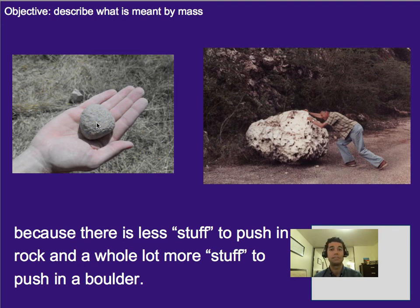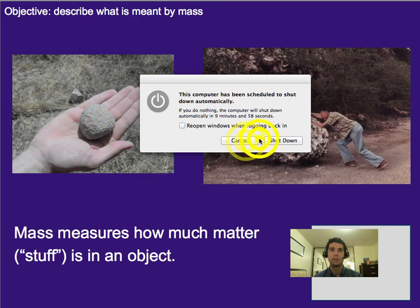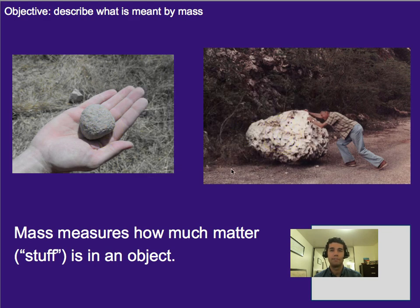To put it in a more scientific way, there's less matter in the small rock — fewer atoms or molecules, however you want to define that. Whereas with the large boulder, there's more matter, more atoms, more molecules, more stuff there to push. As a result, it's harder to push. In science, we call the measure of how much matter or stuff is in an object its mass. Things with lots of atoms and molecules tend to have greater mass, and things with less tend to have less mass. So this small rock has very little mass, and this boulder has a lot of mass.